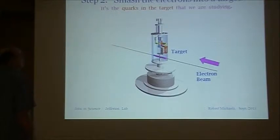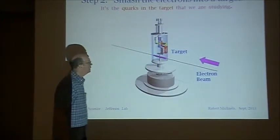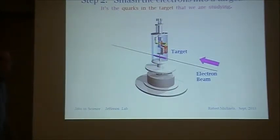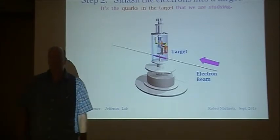Step two, you have to take those electrons and smash them into a target. It's the quarks in the target that we're trying to study. Here's a target. This happens to be cryogenically cooled helium. You cryogenically cool it to get a very high density, and then you bring the electron beam in and scatter from the target.